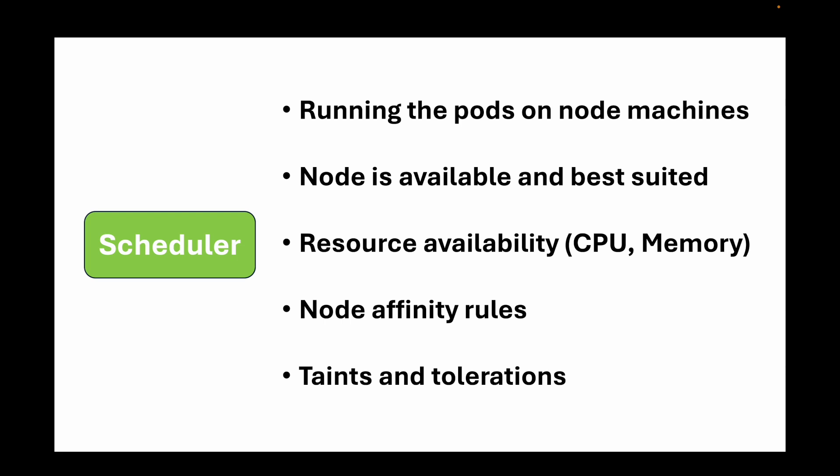For example, if we are creating a pod that requires four CPUs and a specific zone, the scheduler will ensure the pod lands on a node that meets those criteria. If you've created a taint and toleration for a node, the scheduler will make sure the pod runs on that specific node only and not on others. The scheduler is responsible for running pods on the correct node machines.